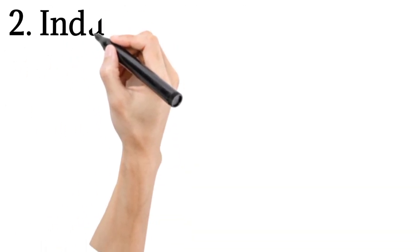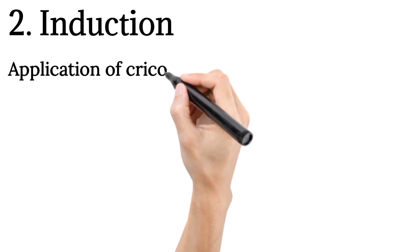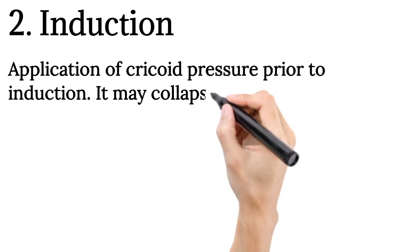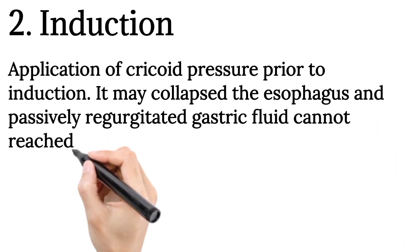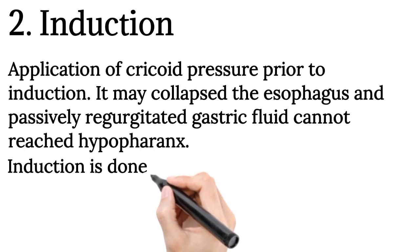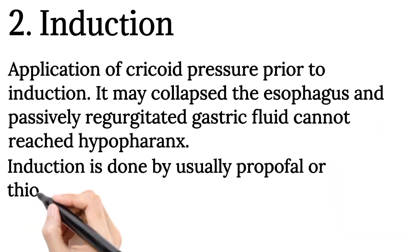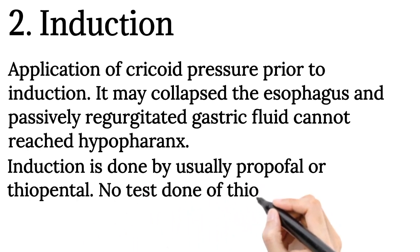Induction: Application of cricoid pressure prior to intubation may collapse the esophagus so passively regurgitated gastric fluids cannot reach the hypopharynx. Induction is done by usually propofol or thiopental. No test dose of thiopental is given.